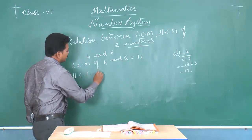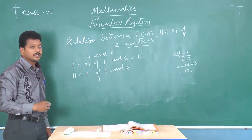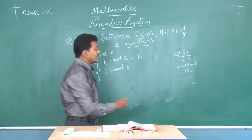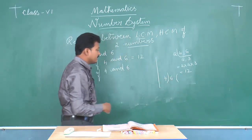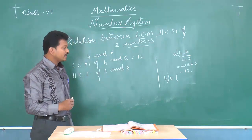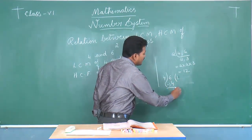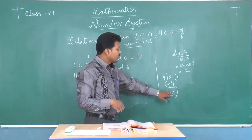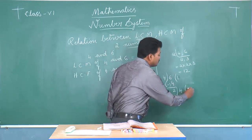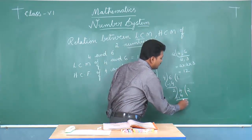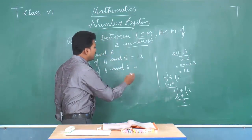Find the HCF of four and six. To find the HCF, we have many methods. Let us go with the division method. The bigger number divided by the smaller number: six is the dividend and four is the divisor. Four goes once into six, giving four. Six minus four is two. The remainder two now becomes the divisor. Two twos are four. Four minus four is zero. Therefore, HCF of four and six is equal to two.